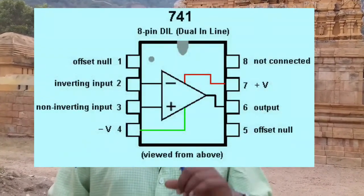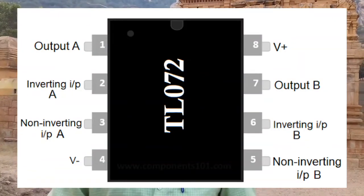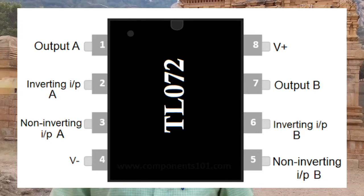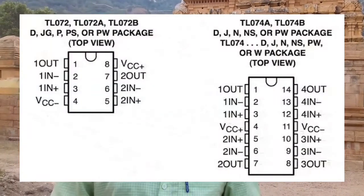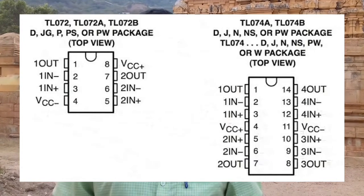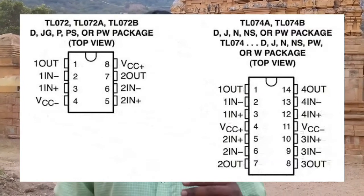There are single amp, dual amp, and quad amp types. The LM741 IC has one Operation Amplifier inside. The dual amp has two Operation Amplifiers in one IC, each used for different applications. The quad amp has four Operation Amplifiers, and those four can each be used for different applications.